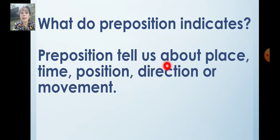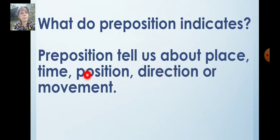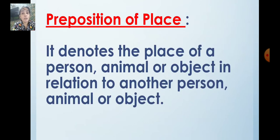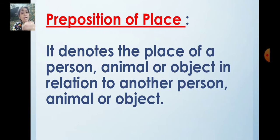So preposition tells us about place, time, position, direction or movement. Let us learn a brief about all these preposition words. Now first one is preposition of place. So what is preposition of place? It denotes the place of a person, animal or object. It shows the person, animal or object in relation to another person, animal or object. Now let us understand by reading the example.